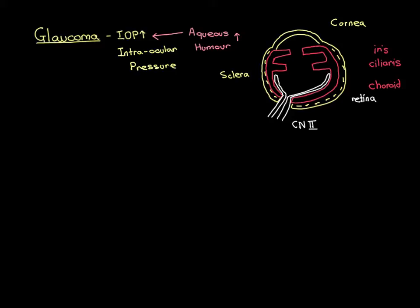There is something very important suspended in the middle of the ciliary muscle — the lens. The lens is suspended from the ciliary muscle by the suspensory ligaments. The membrane lining the ciliary muscle and facing into this chamber is called the ciliary epithelium, which is responsible for producing the aqueous humour. So the ciliary epithelium lines the ciliary muscle and faces into this chamber.